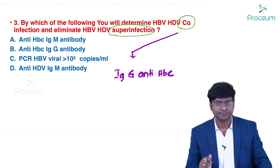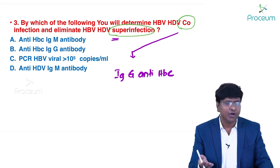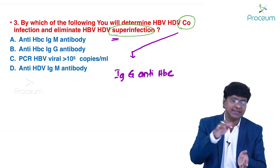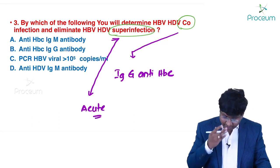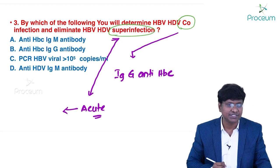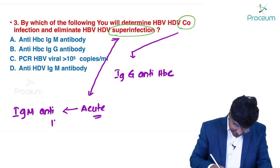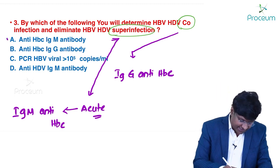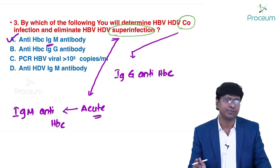To eliminate super-infection, which is an acute presentation, the serology that will be positive is IgM anti-HBC. Therefore, the answer is IgM anti-HBC antibody — by doing this serology, you can eliminate super-infection.